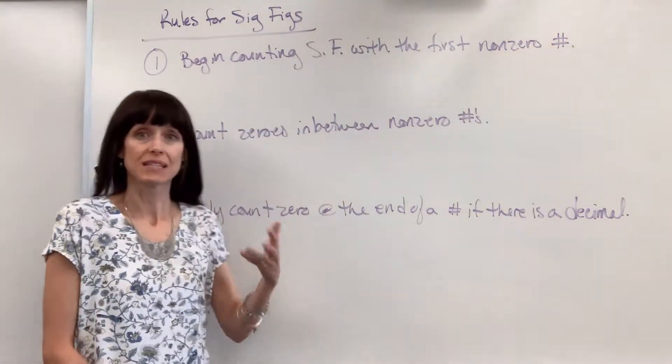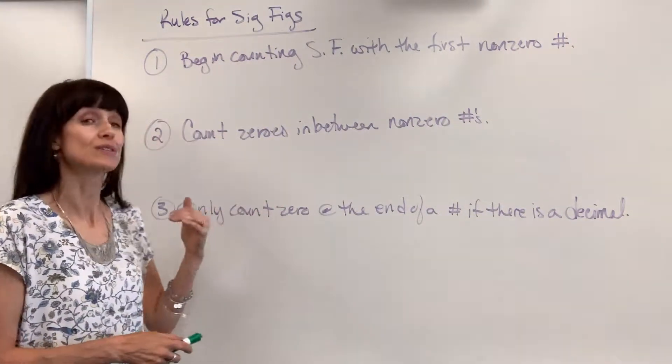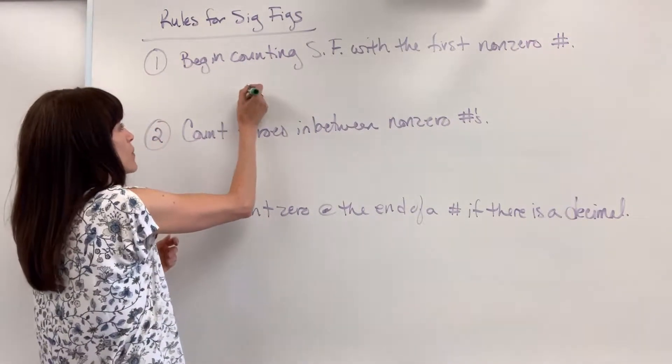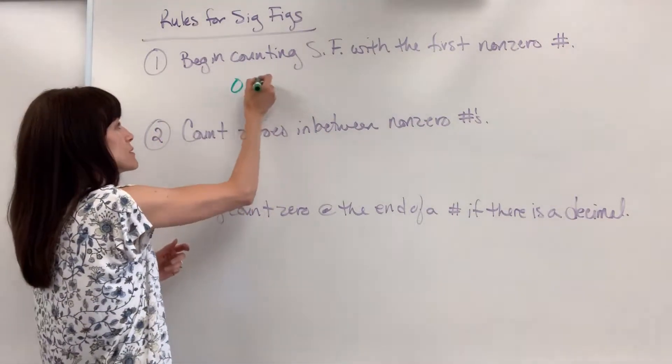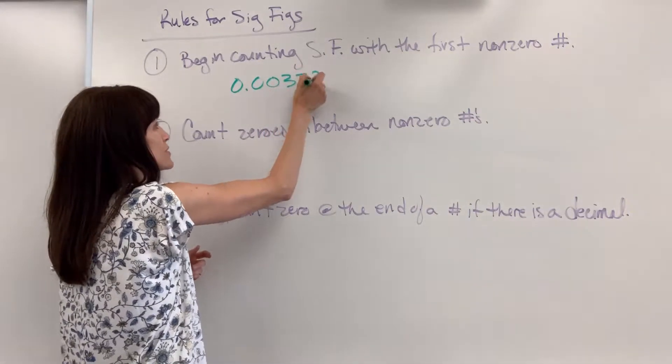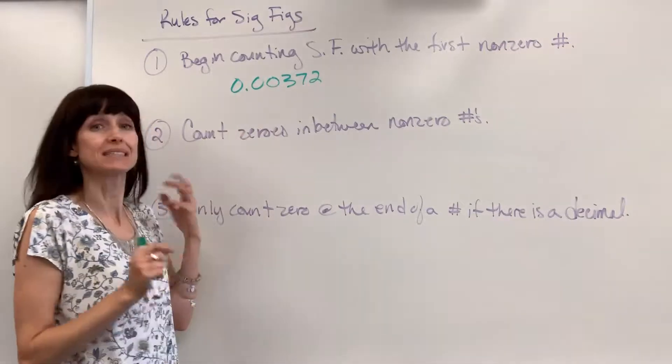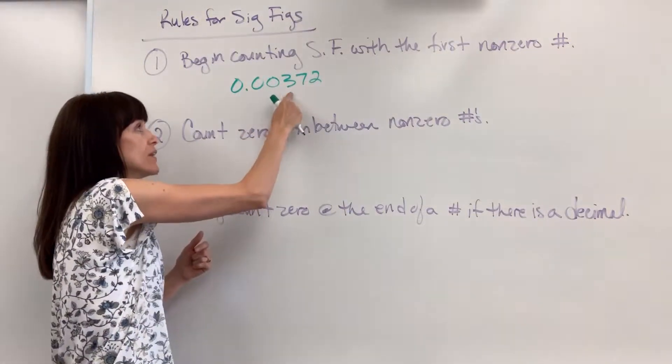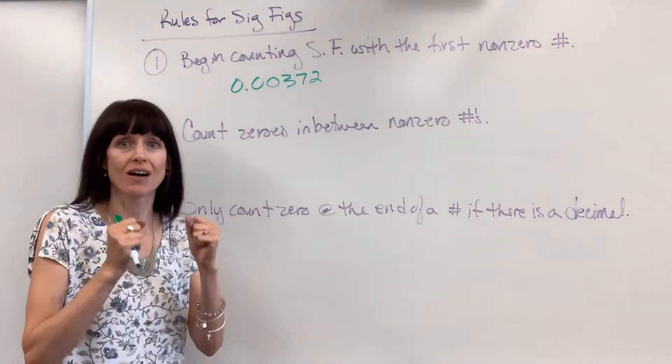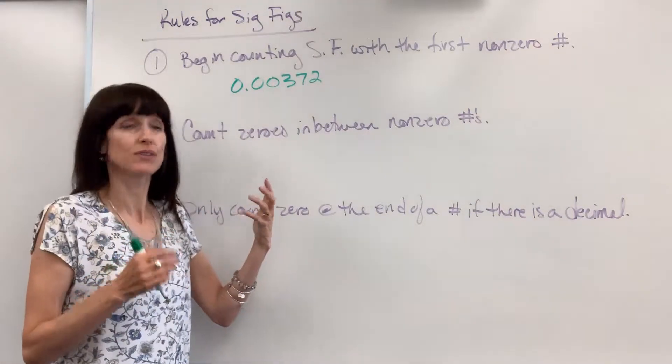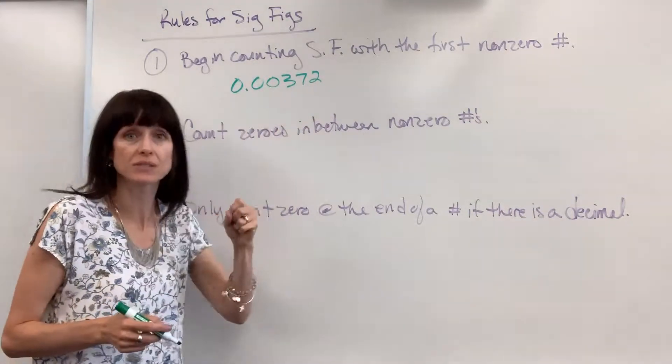We begin counting sig figs with the first non-zero number. So look at this. If I have 0.00372, I can't count any of those beginning zeros because you start counting with the first non-zero number. These are just placeholders. They're telling us that the number begins at the thousandth place.